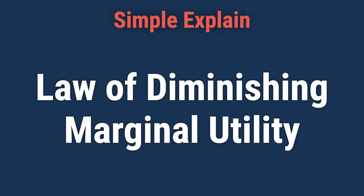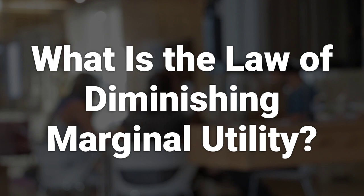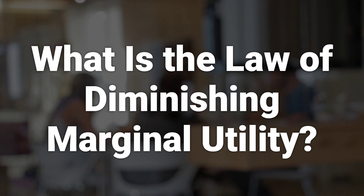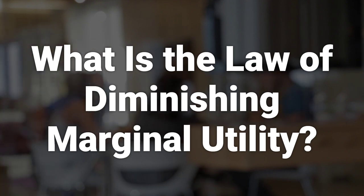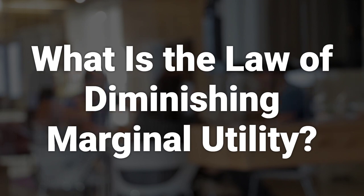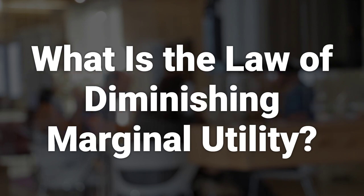Today, we will talk about the Law of Diminishing Marginal Utility. The Law of Diminishing Marginal Utility states that as consumption increases, the marginal utility derived from each additional unit declines.